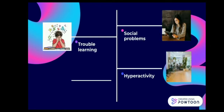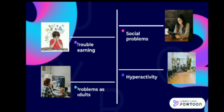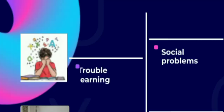Complications of dyslexia can lead to a number of problems including trouble learning, social problems, problems as adults, and hyperactivity, and so on. Children who have dyslexia are at increased risk of having attention deficit hyperactivity disorder, or ADHD, and vice versa. ADHD can cause difficulty sustaining attention as well as hyperactivity and impulsive behavior, which can make dyslexia harder to treat.